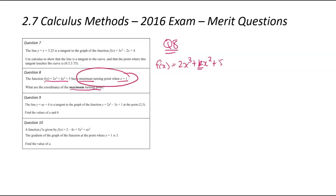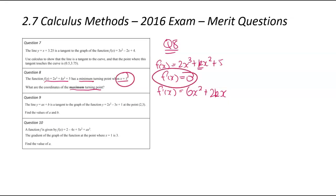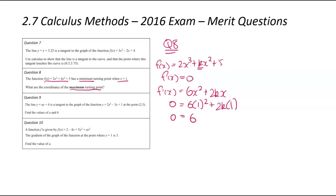The information we're given is about the turning point, and at a turning point f'(x) equals 0. So we differentiate to get the gradient function: f'(x) equals 6x squared plus 2kx. We know the x value is 1 and f'(x) is 0, so we substitute: 0 equals 6 times 1 squared plus 2k times 1, giving 0 equals 6 plus 2k. Simplifying: negative 6 equals 2k, so k equals negative 3.